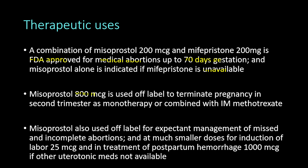Misoprostol 800 micrograms is used off-label to terminate pregnancy in the second trimester as monotherapy or combined with intramuscular methotrexate. It is also used off-label for expectant management of missed and incomplete abortions, and at much smaller doses for induction of labor (25 micrograms). It is used in treatment of postpartum hemorrhage at a dose of 1000 micrograms, only if other uterotonic medications are not available.